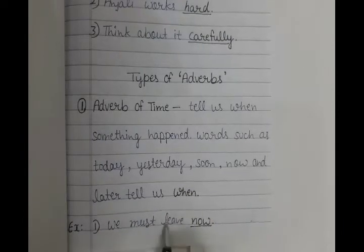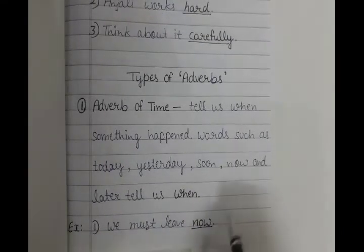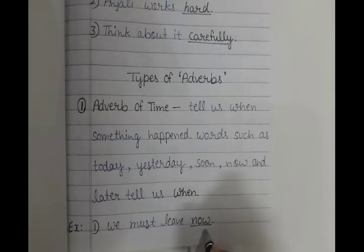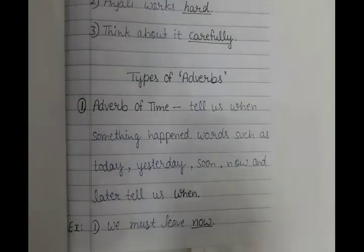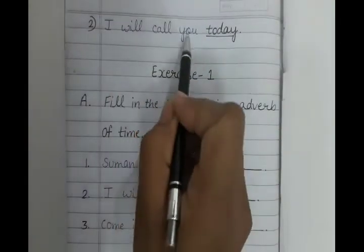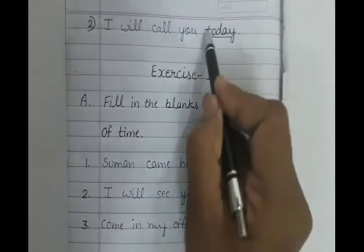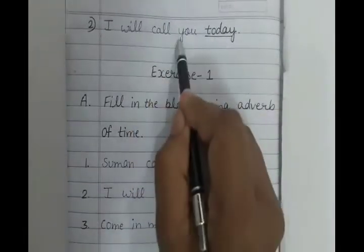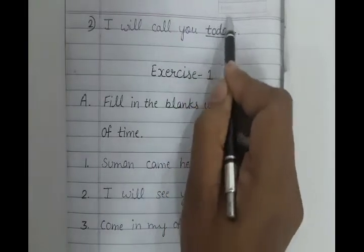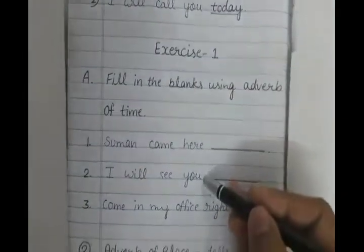For example: 'We must leave now.' हमें अब चले जाना चाहिए. तो यहाँ now time को बता रहा है. Second example: 'I will call you today.' मैं तुम्हें call करूंगा आज. तो यहाँ today क्या है? Time को show कर रहा है कि मैं call करूंगा — कब? आज. तो today adverb of time को show कर रहा है. Here is an exercise — do it by yourself.